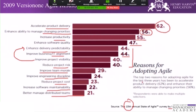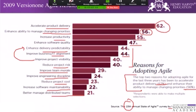Improved team morale was at 29 percent, engineering practices at 24 percent, project cost reduction at 22-23 percent, and better managed distributed teams at 21 percent. This is the 10th State of Agile survey. The top two reasons for adopting agile were accelerated product delivery at 62 percent and enhanced ability to manage changing priorities at 56 percent — these made agile a buzzword in the industry.